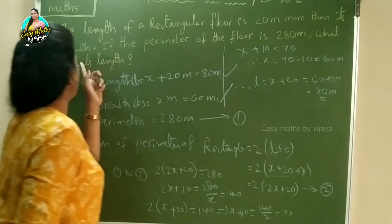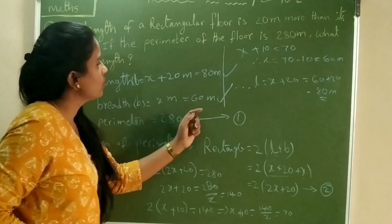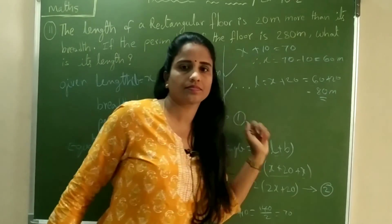So the length of the floor is 80 meters and the breadth is 60 meters. These are our required values.